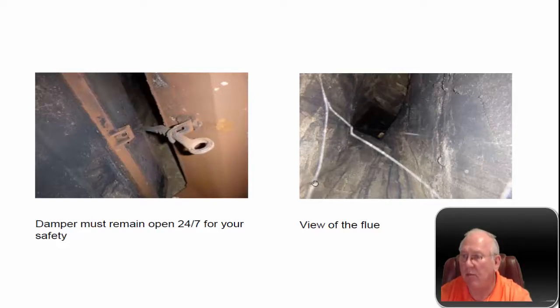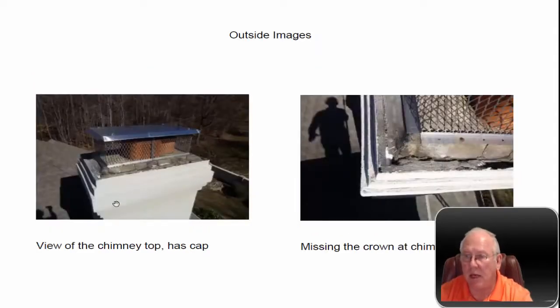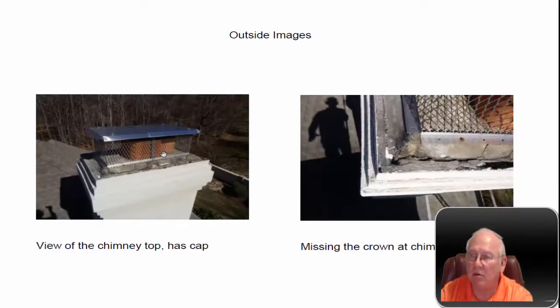That damper must stay open all the time. View of the flue system looks fine. If we go up on top we can see what the top of the chimney looks like. It's got a stainless steel cap up here covering the flue of course, but the area around it, the crown of this chimney, you can see there's a lot of cement missing.